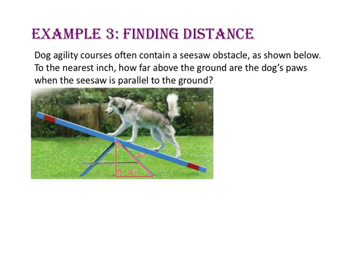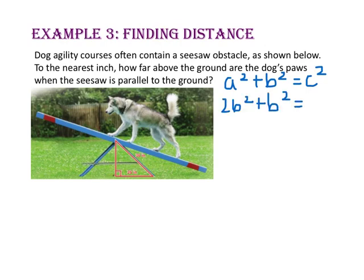In example 3, we will find a distance. Dog agility courses often contain a seesaw obstacle as shown below. To the nearest inch, how far above the ground are the dog's paws when the seesaw is parallel to the ground? Since we have a right triangle and we know the length of two sides, let's start with the Pythagorean Theorem: a squared plus b squared equals c squared. Since 26 is the length of the leg, we will substitute that in for a, and since 36 is the length of the hypotenuse, we'll substitute that for c.